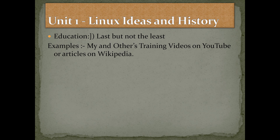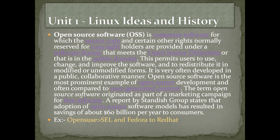Then we have education — last but not the least. Examples: my and others' training videos on YouTube or articles on Wikipedia. Open source software (OSS) is computer software for which the source code and certain other rights normally reserved for copyright holders are provided under a software license that meets the open source definition, in the public domain. You can modify it, add features, sell it commercially, or redistribute it without paying a single penny. A report by the Standish Group states that adoption of open source software models has resulted in savings of about $60 billion per year to consumers.